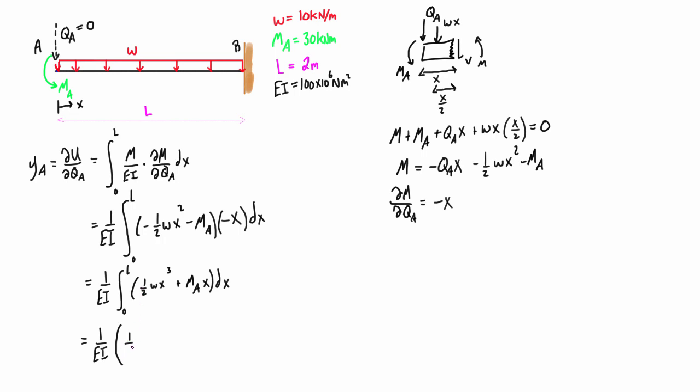We're going from zero to L, so we can just swap out this X here with an L, so WL to the fourth just like that.